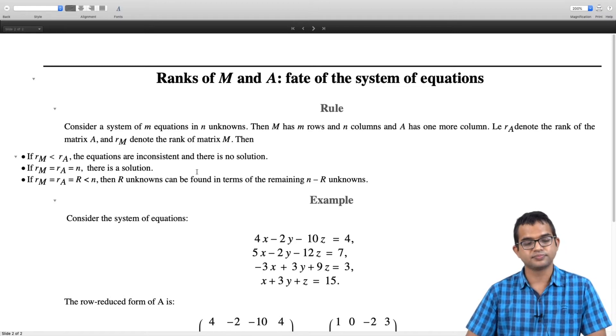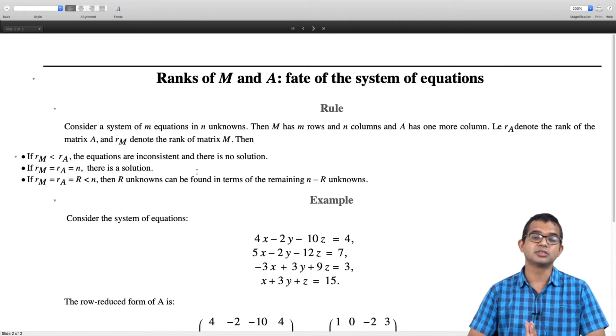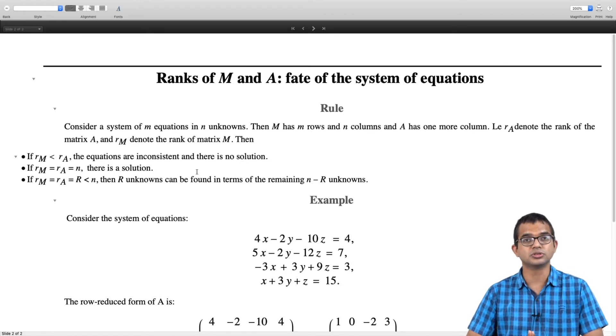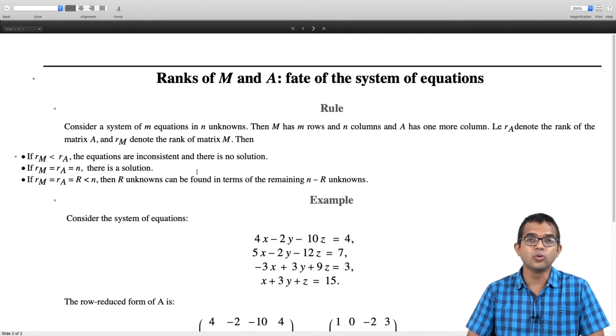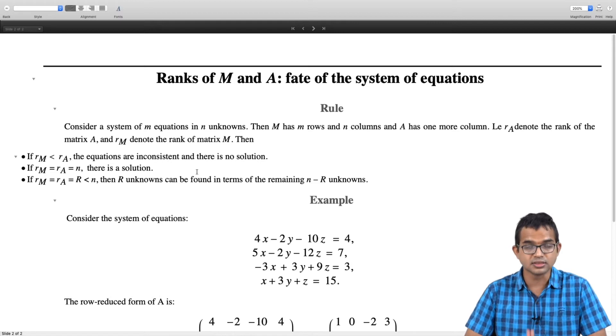Now if rM is less than rA then it is a problem. So for this system of equations there will be no solution. There is an inconsistency. Only if the rank of rM, the rank of M is equal to rank of A, only then are your system of equations consistent.